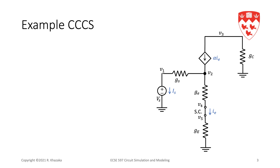We can now start writing KCL. KCL at node 1: the current in resistor gs is gs(v1 - v2) — remember we are adding the currents leaving the node. So the current leaving node 1 through gs is gs(v1 - v2). The current leaving node 1 in the voltage source is is. From the stamp for a voltage source, we need to define the current in a voltage source as one of our variables.